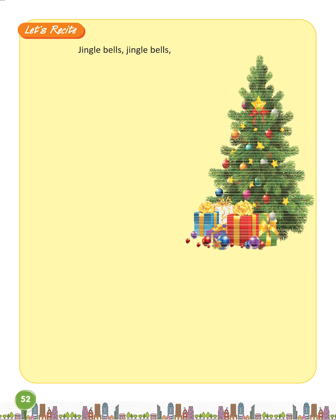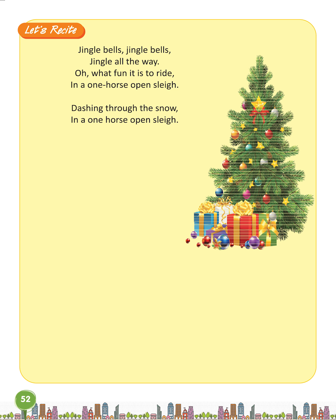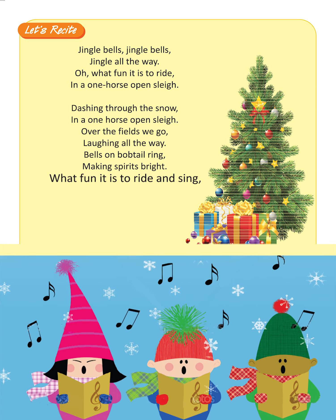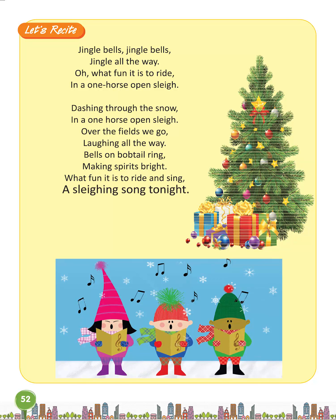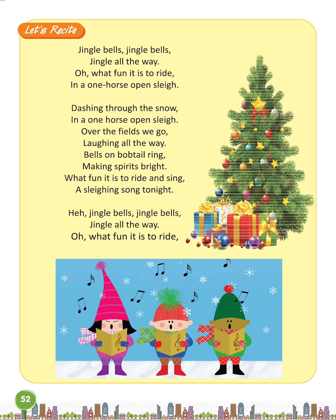Let's recite. Jingle bells, jingle bells, jingle all the way. Oh, what fun it is to ride in a one-horse open sleigh. Dashing through the snow, in a one-horse open sleigh, over the fields we go, laughing all the way. Bells on bobtail ring, making spirits bright. What fun it is to ride and sing a sleighing song tonight. Jingle bells, jingle bells, jingle all the way. Oh, what fun it is to ride in a one-horse open sleigh.